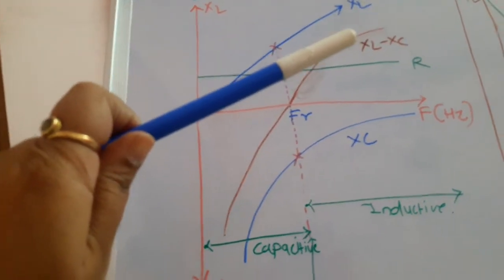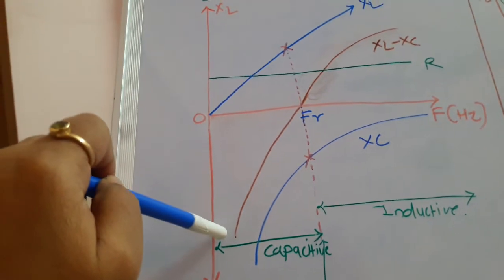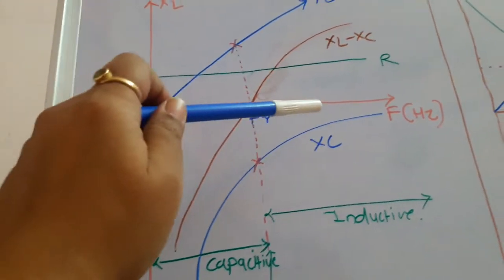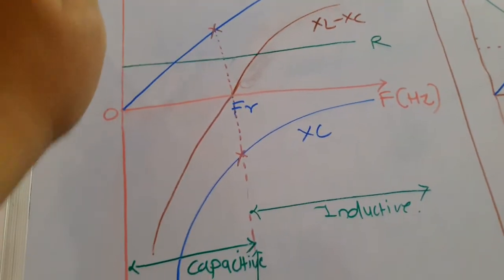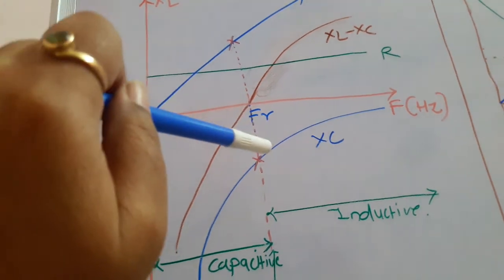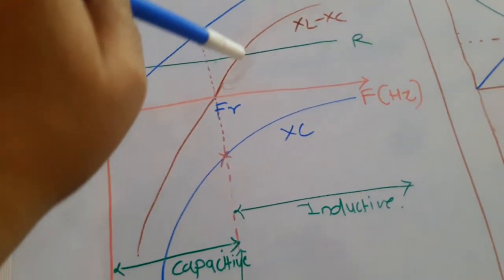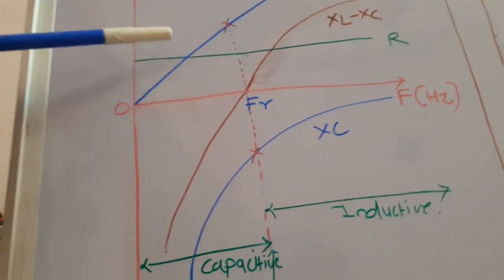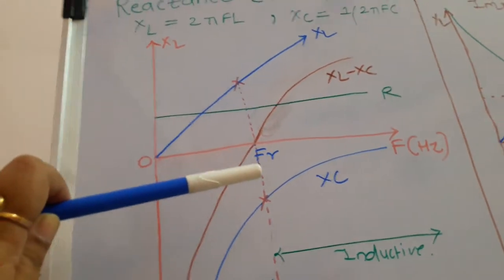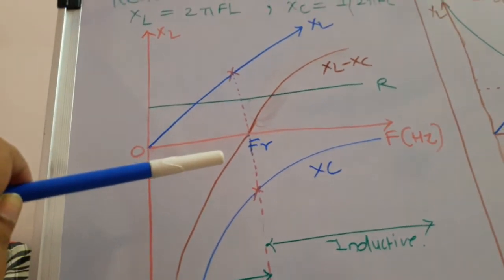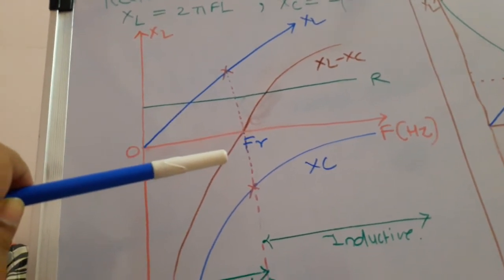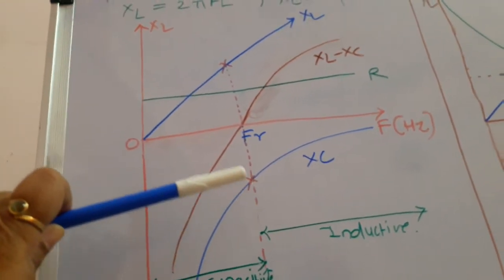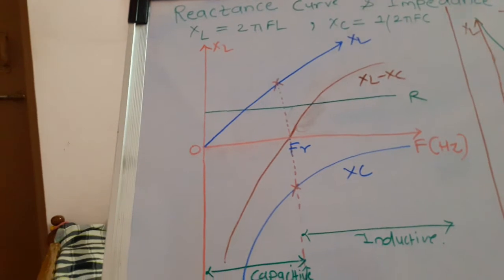At low frequencies, the resultant XL minus XC is entirely capacitive and negative, placing the curve below zero. As frequency increases, XL increases and XC reduces, so XL minus XC becomes positive and we move above the zero line. For less values of frequency, inductive reactance is small and capacitive reactance is more, so XL minus XC is negative and the curve is in the downward portion of the graph.